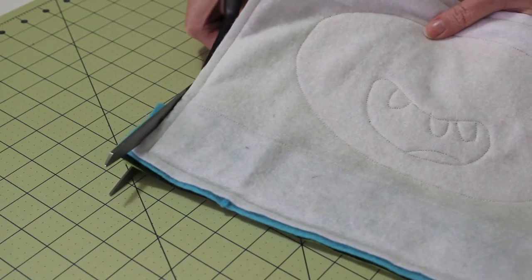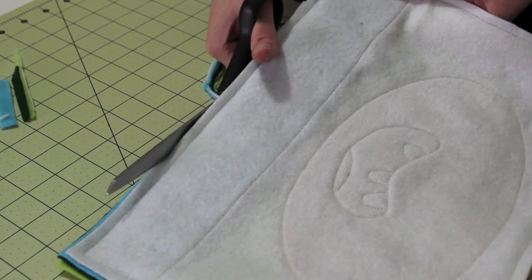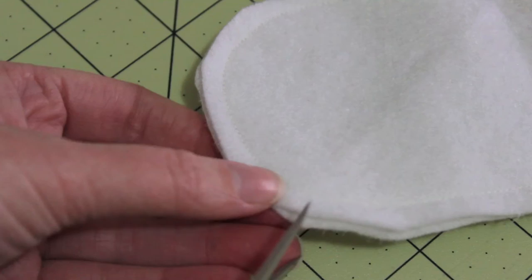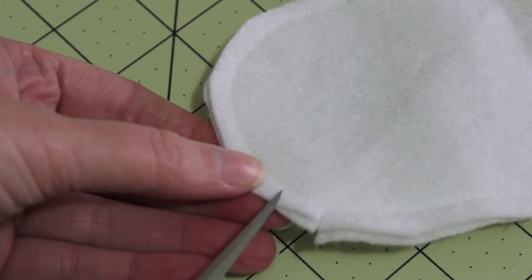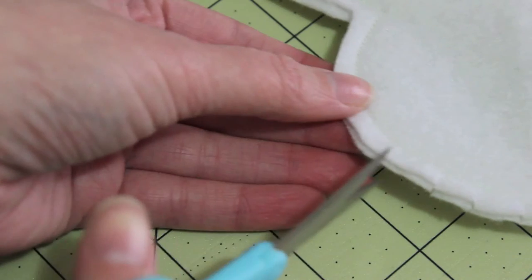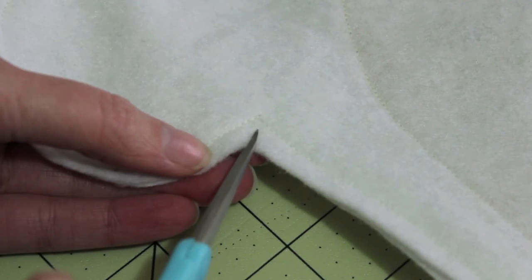Carefully trim off any excess felt along each of the sides and clip the corners. Make little snips in the seam allowance at the curved areas at the top of Finn's hat. This step will help the curves sit flat when you pull the pillow out the right way.